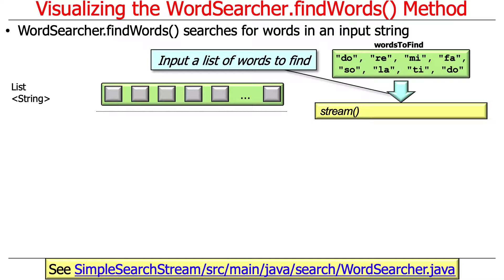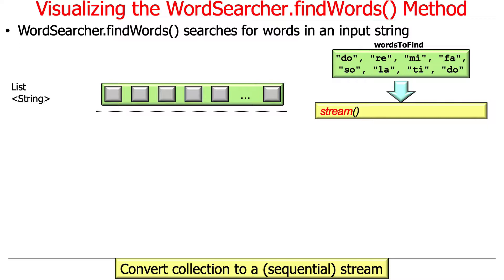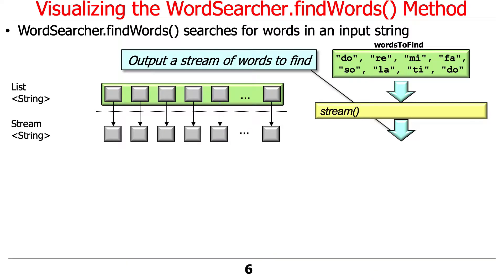So we're going to have this method called findWords, and you saw how findWords was called in the context of the main driver program a minute ago. FindWords takes a list of words defined relative to an input string that's been given to the word searcher object via its constructor. So we start out with a list of words — basically strings. And then we call stream(), which is a factory method that converts the collection, the list, into a sequential stream. We know it's sequential because it didn't say parallel stream. What we end up with now is a stream of words defined — we converted the list of strings to a stream of strings.